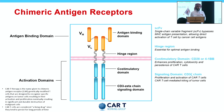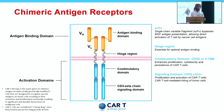The chimeric antigen receptors came into the field as a treatment for this type of disease. CAR-T cells are genetically modified T-cells that carry these CAR receptors, which are specific to antigens on cancer cells and will maintain control of the disease.